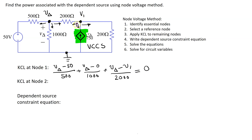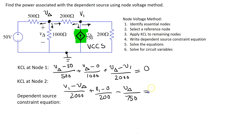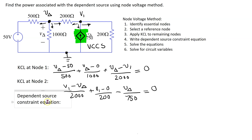At the other node, the branch current through the 2000-ohm resistor is (V1 minus V_delta) over 2000. The branch current through the 200-ohm resistor is V1 minus 0 over 200. The last branch current has the dependent current source connected, and since our assumed direction is opposite to the current source direction, we get minus V_delta over 750, equal to zero. Since V_delta equals one of the node voltages, no dependent source constraint equation is needed.